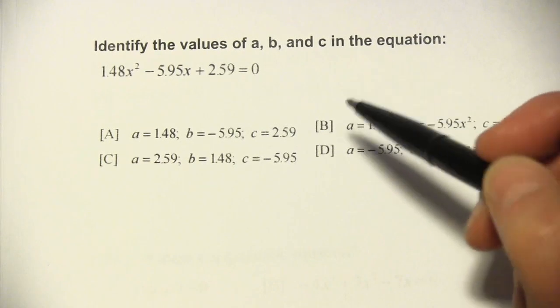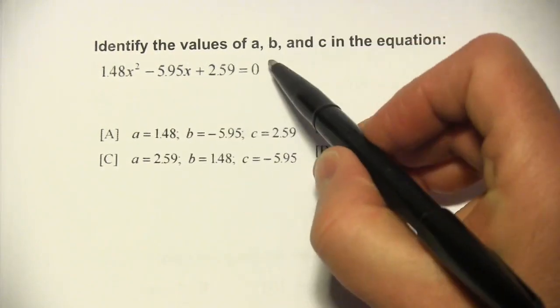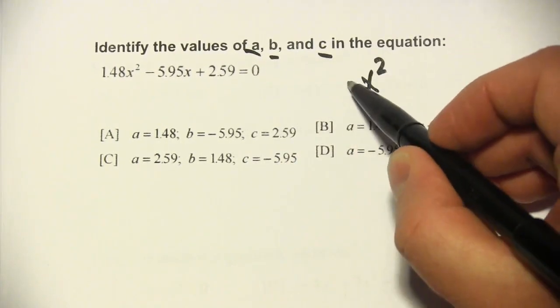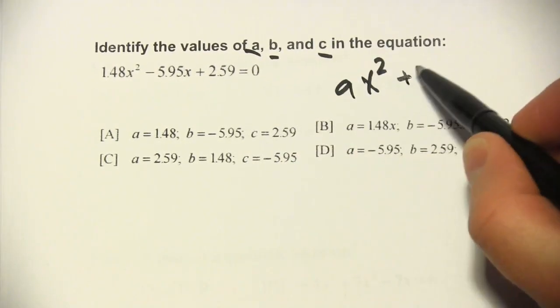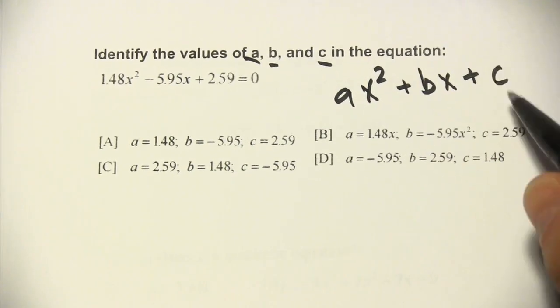The way this works is the coefficients of the terms of x, we have these nicknames we give them. We call them a, b, and c. The x squared term, the coefficient is a. The x term, the coefficient is b, and the number term we just call c.